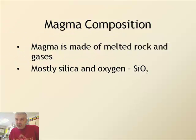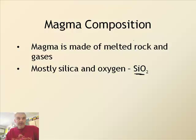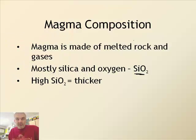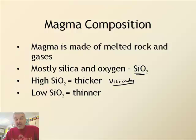Magma is the melted rock we just talked about — it's mostly made of silica and oxygen. If you look at the periodic table, silicon (Si) and oxygen make up most of the liquid rock. If it's thicker, we say it has high viscosity — write that down. High viscosity means it's really thick, like syrup compared to water.